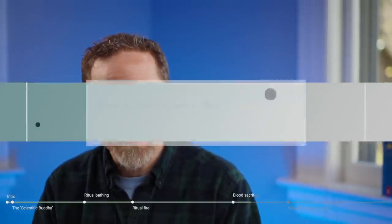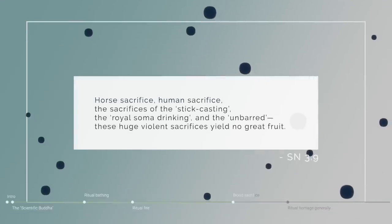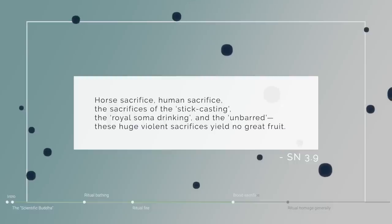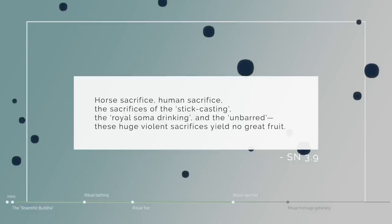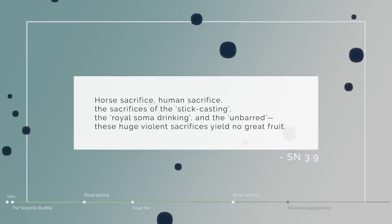What he said was, horse sacrifice, human sacrifice, the sacrifices of the stick casting, the royal soma drinking, and the unbarred, I should say we don't really know what these sacrifices were, but presumably they involved blood, these huge violent sacrifices yield no great fruit.